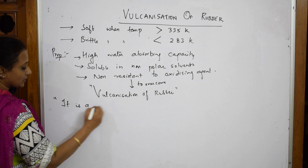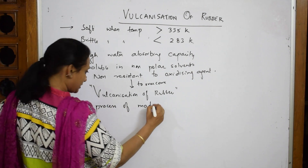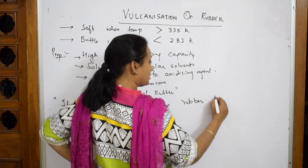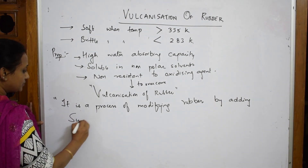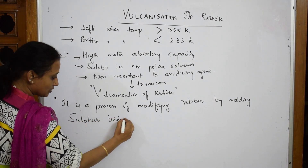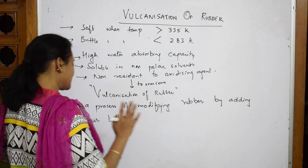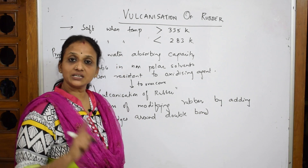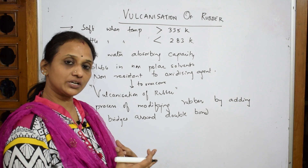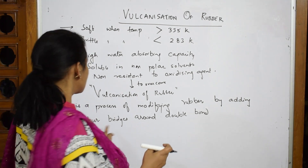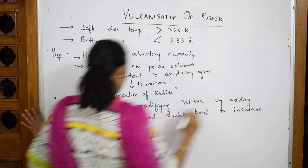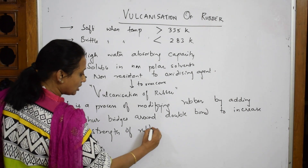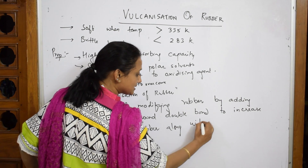Vulcanization is a process of modifying rubber by adding sulfur bridges around the double bonds to increase its strength. We want that flexibility — not too strong, not too soft — just the right stiffness. This is done along with certain additives or accelerators.